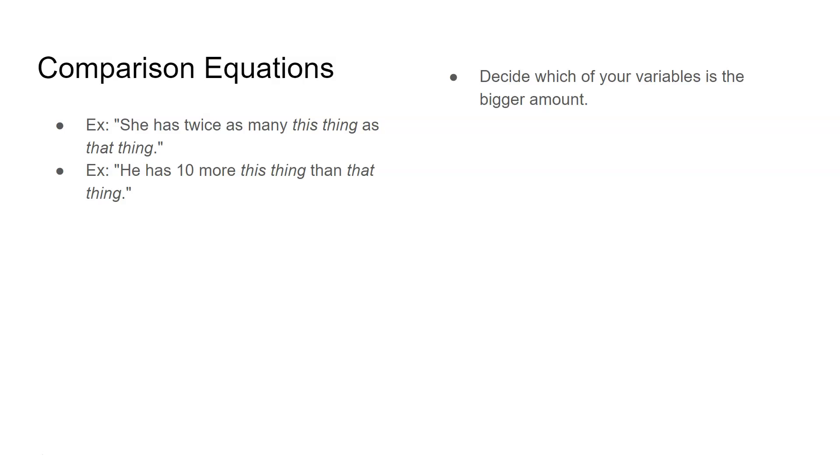To write an equation for that, you have to decide which of your variables is the bigger amount. I use what I call my metaphor circles. I literally draw these circles and decide, of the two things, which one is the bigger thing and I write that variable on the bigger circle. Then I ask myself, how would the smaller variable have to grow in order to be equal to the bigger variable?